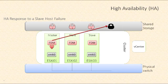At this point, any virtual machines that were running on that failed host will begin to boot up on other hosts. And if you've configured restart priority on your virtual machines using VM overrides, the virtual machines with the highest priority will boot up first. So that's a slave host failure.